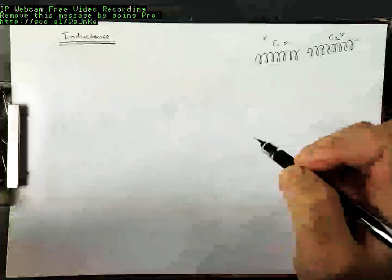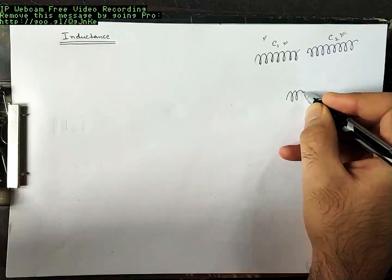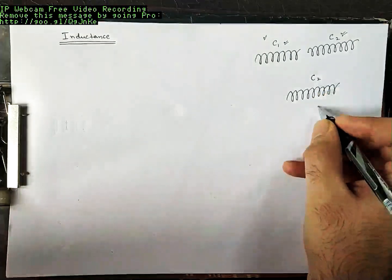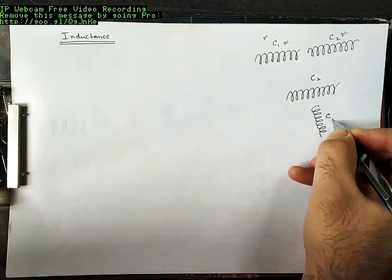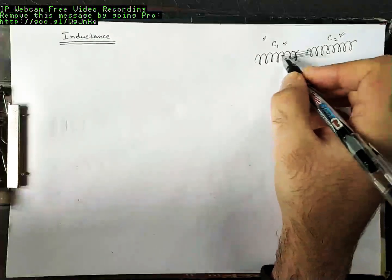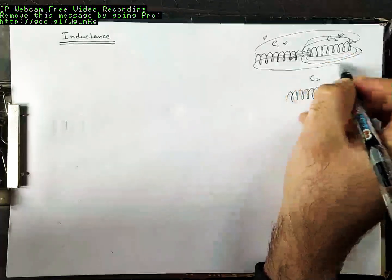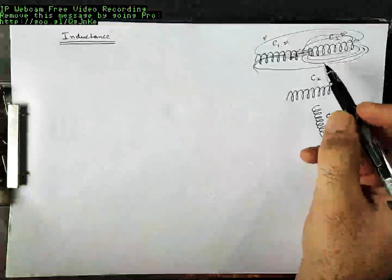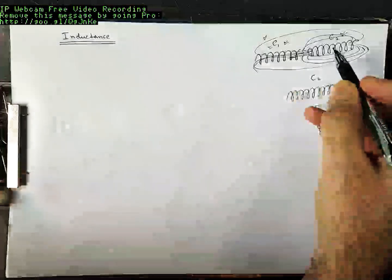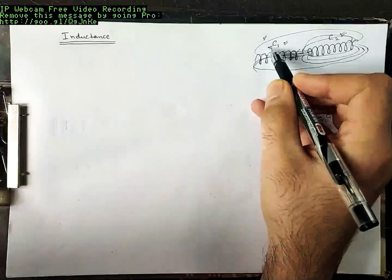Now, had I placed the two coils in this configuration — I will draw coil C2 over here and coil C1 over here — in this case, part of the flux of coil C2 is also linking coil C1. So whenever there is a change in current in C2, there is a change in flux in C2, which means a change in flux through C1, and there is an induced EMF in C1.